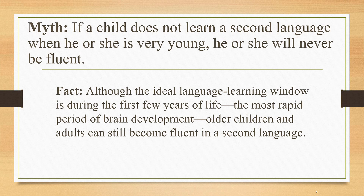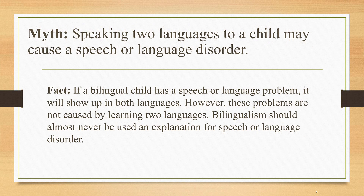Myth number two: if a child does not learn a second language when very young, he or she will never be fluent. Fluency is often perceived as not only how much language a person learns, but how they produce that language. A child may learn a language without an accent, while an adult learns it at a deeper level but still maintains an accent. Although the ideal language learning window is during the first years of life — the most rapid period of brain development — older children and adults can still become fluent in a second language.